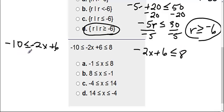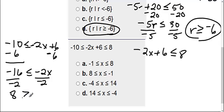So first I'm going to solve this one over here. I need to get my x by itself. So I need to subtract 6 from both sides first. So negative 10 and negative 6 is negative 16. I still have this less than or equal to negative 2x. And then I need to divide by negative 2. Again, we're not forgetting to flip that sign.